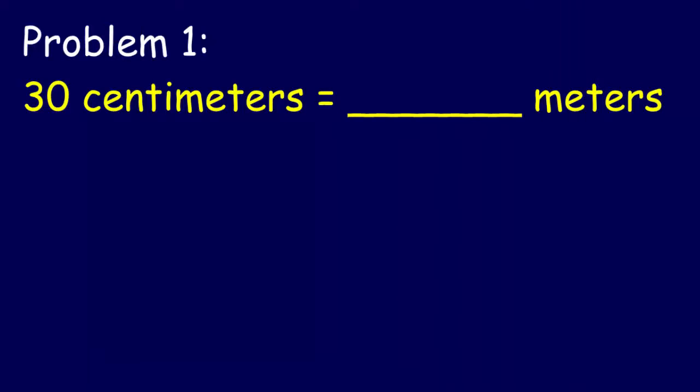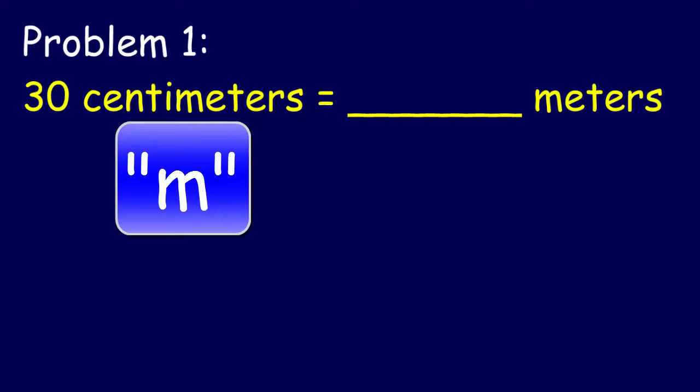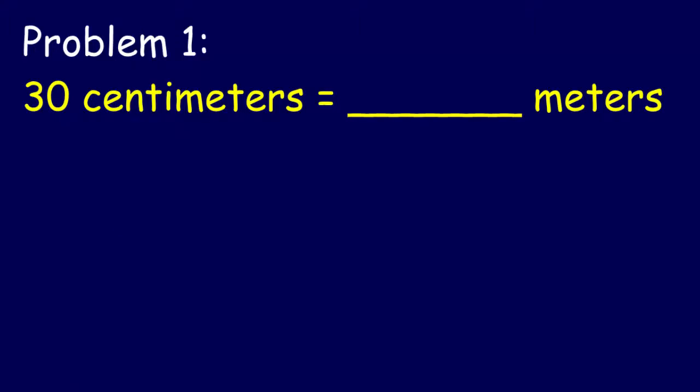Here we have problem one. It says 30 centimeters is equal to how many meters. The first thing I'm thinking to myself: which is the larger unit, the centimeters or the meters? Since I know meters is a base unit and centimeters means 100 — 100 centimeters in one meter — definitely meters is the larger unit. Since we are expressing a smaller unit in terms of a larger unit, 30 centimeters would have to be less than one meter.